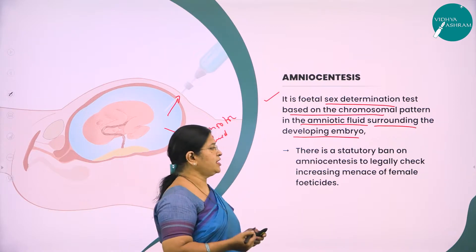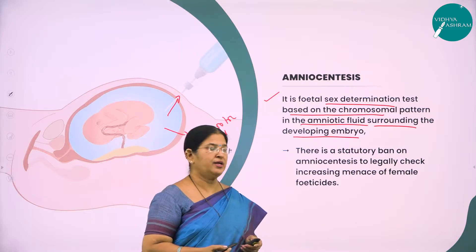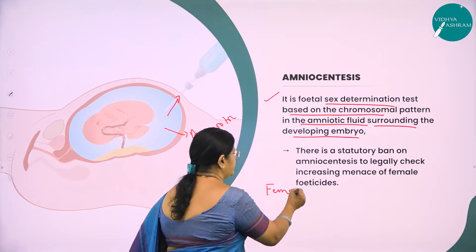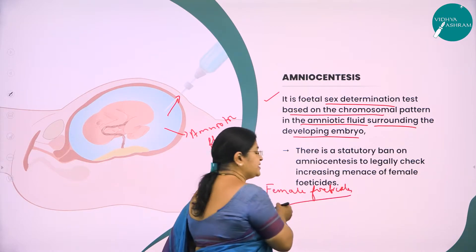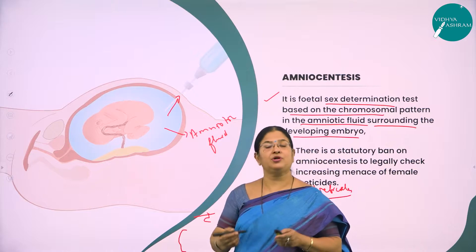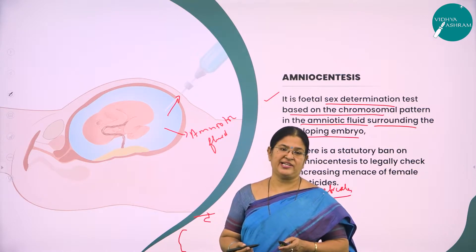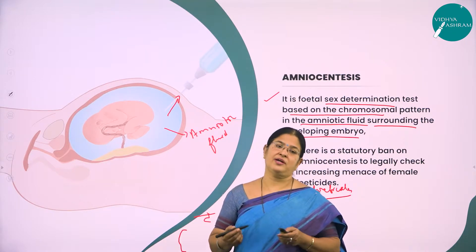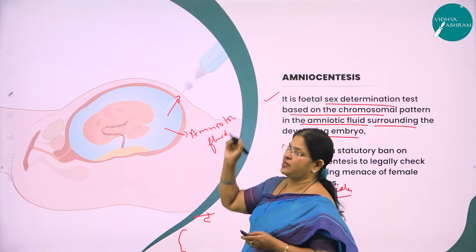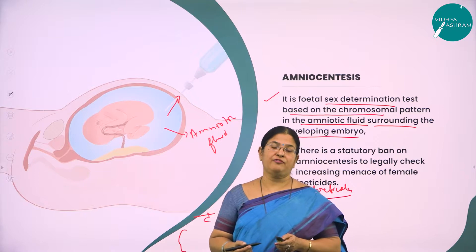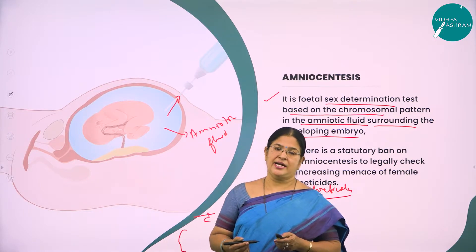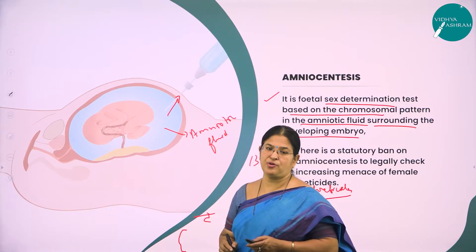Why is amniocentesis banned? Because if a parent comes to know it is a female fetus, they get it aborted — that is female feticide. Sex selection violates the fundamental right to equality. Both male and female have equal status in society, whether it is a developing male fetus or a female fetus. We have no right to destroy the fetus before it is born. Amniocentesis was first used at AIIMS and around 1300 genetic abnormalities can also be studied using it.